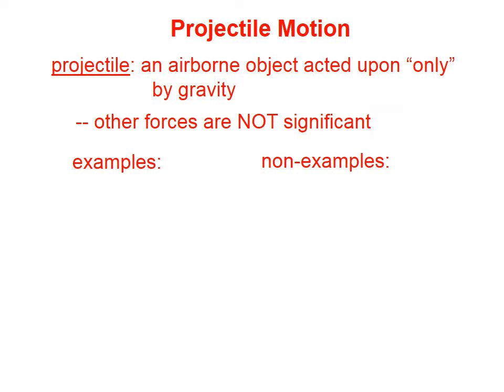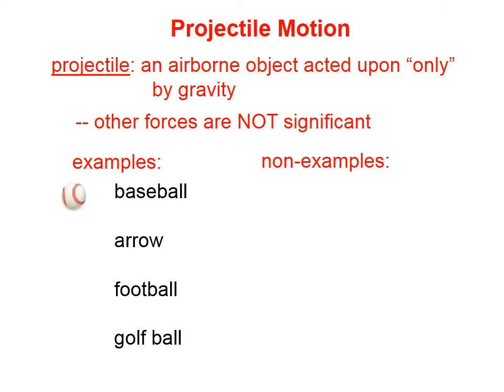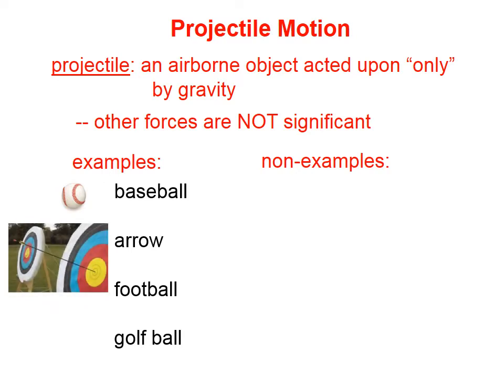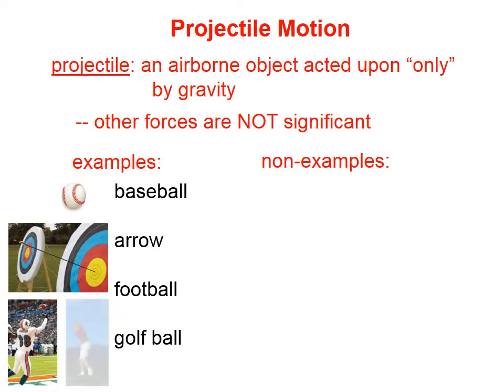A projectile is an airborne object acted upon only by gravity. Other forces, like air resistance or lift, are not significant. Examples of projectiles include baseballs when they're in the air, arrows when they're in the air, and footballs when they're in the air.